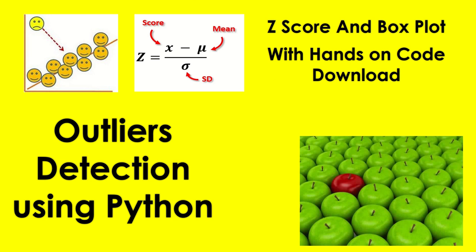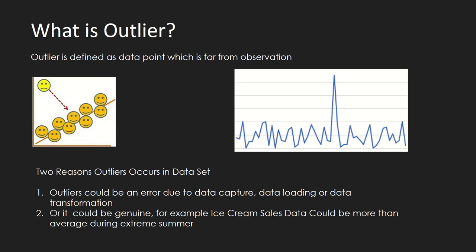Let's see what an outlier is. An outlier is something which is far from your data observations. If you see this diagram, there are some points around this line, and there is one point which is too far from these data points — we can treat this point as an outlier. It is simple and easy to understand.